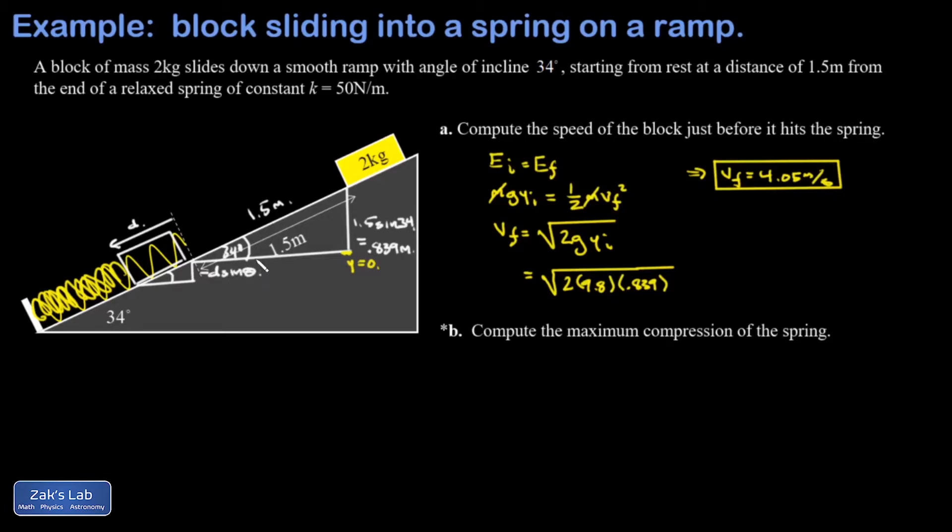Where d is presumed to be a positive number so that negative d sine theta is a negative number. So we set up the energy conservation equation E initial equals E final, and to be clear I'm referring to a different final state this time. Now I'm talking about the moment of max compression instead of the moment just before it hits the spring. And in my initial state there's no motion, there's no spring compression, it's just the gravitational potential energy corresponding to that initial y coordinate, so I'll call it mg y_initial. And in my final state I have both a gravitational potential energy term mg y_final.